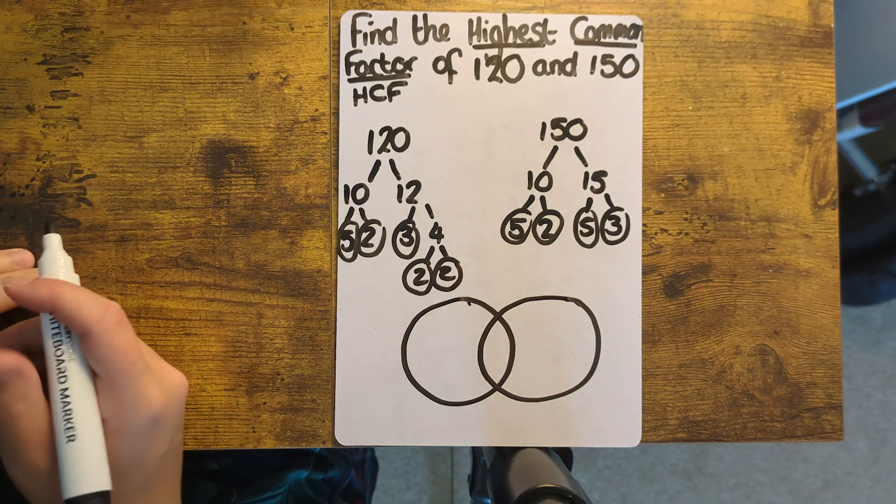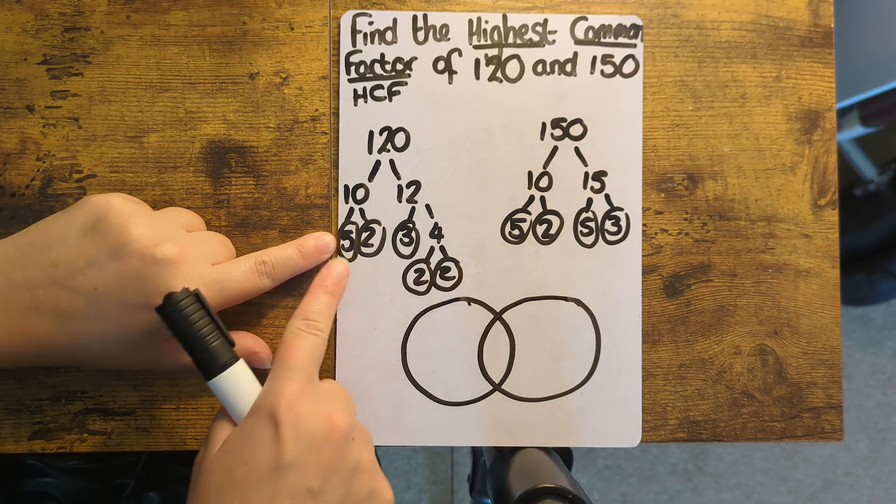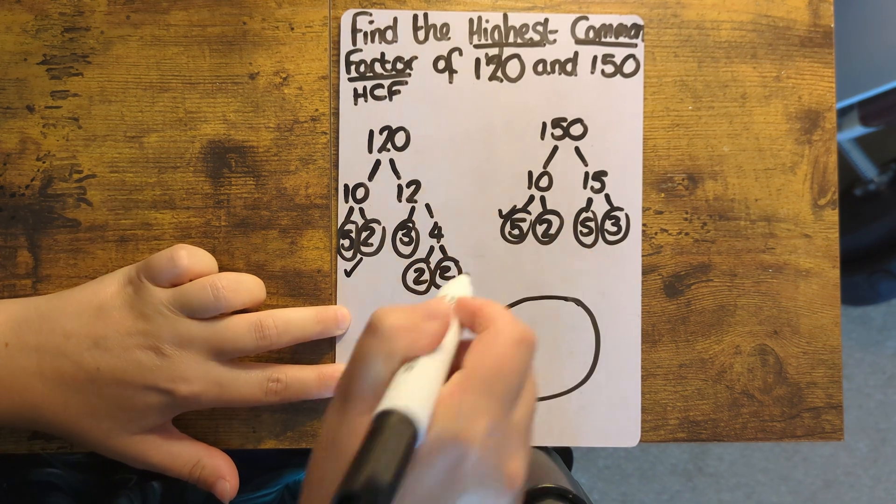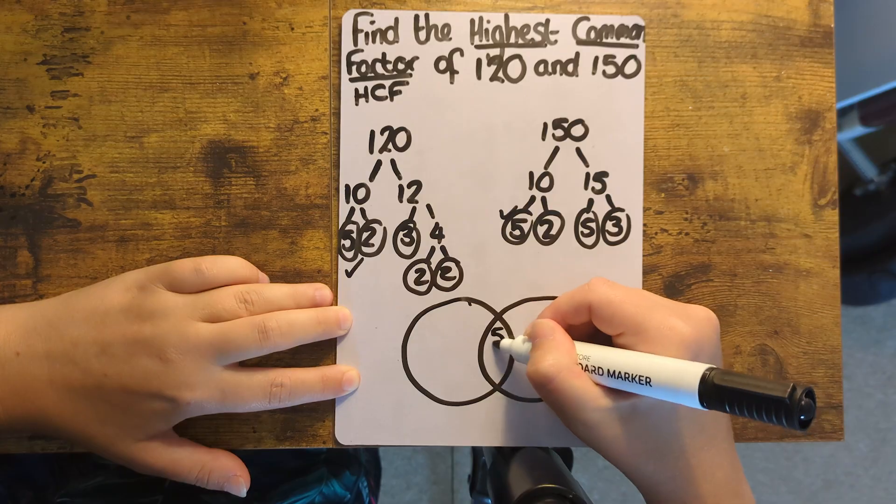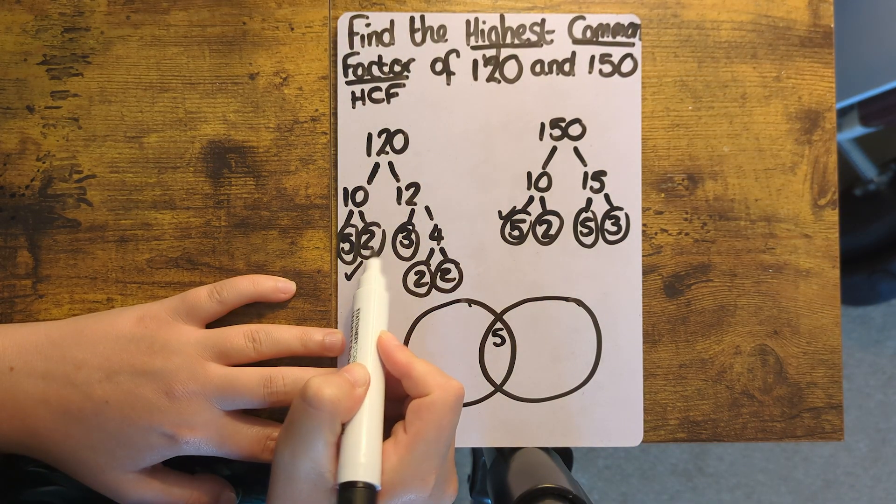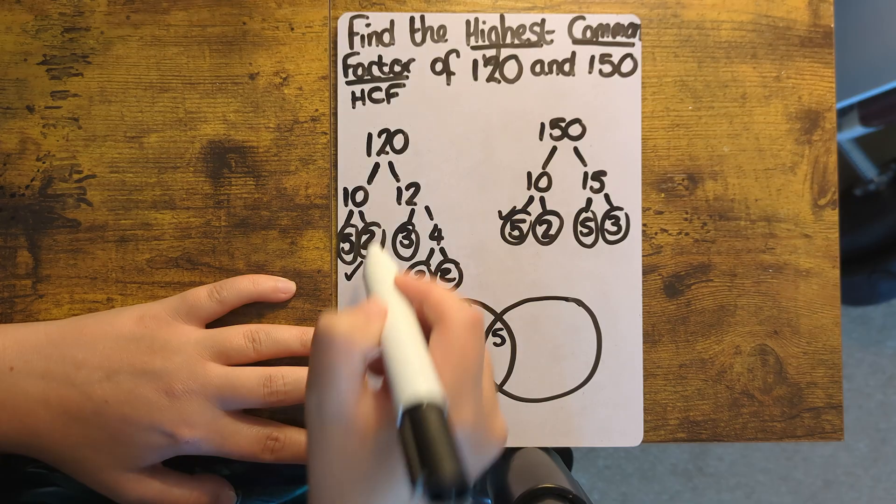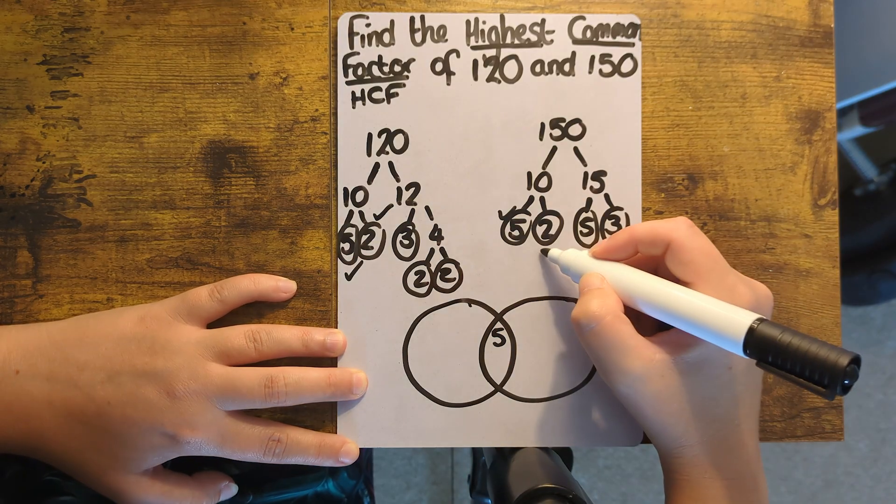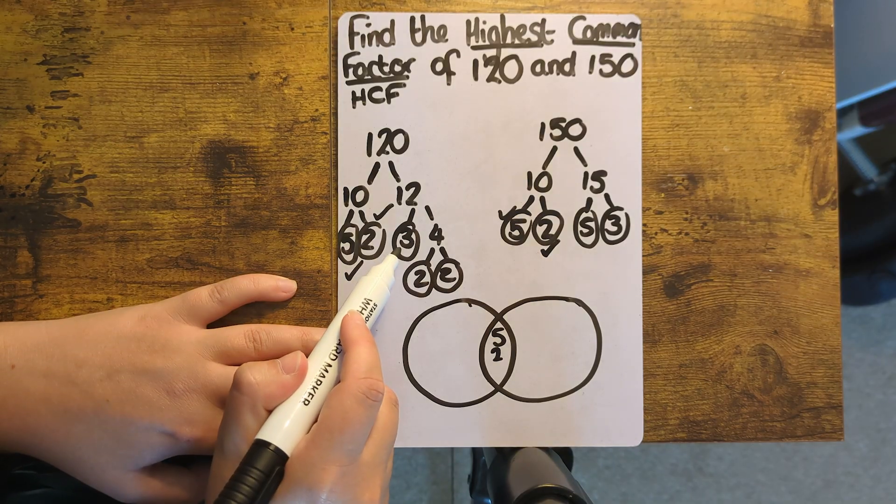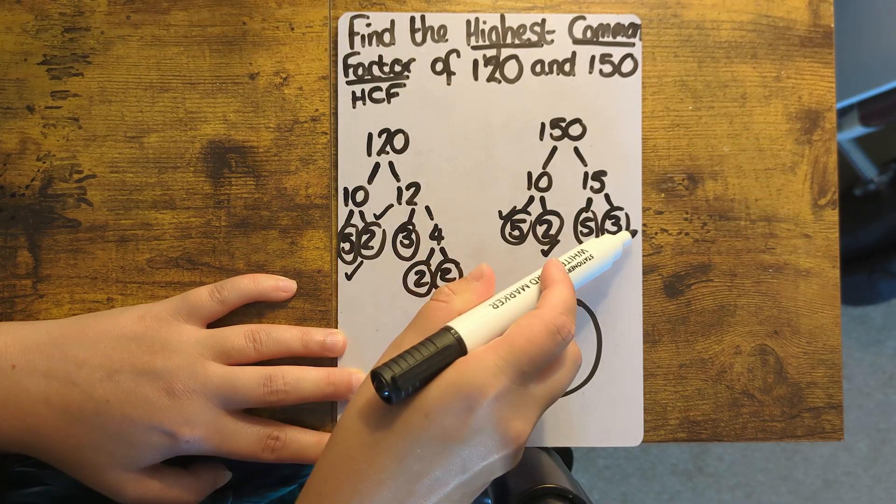Now I'm going to try to pair up as many numbers as possible with the same number in each of the two trees for 120 and 150. So I can pair up these two fives and put them in the middle of the circles. Then this two can be paired up with this one, so they can go in the middle too.